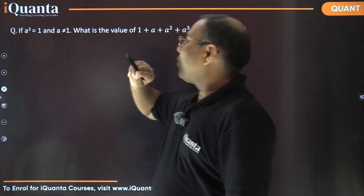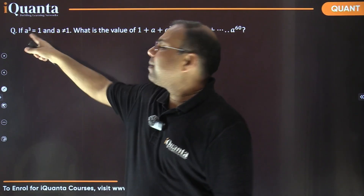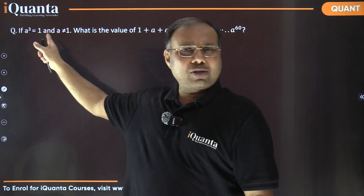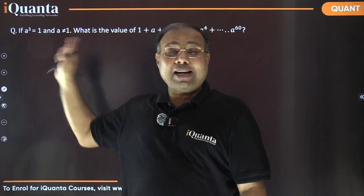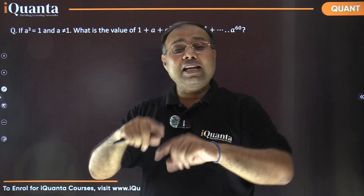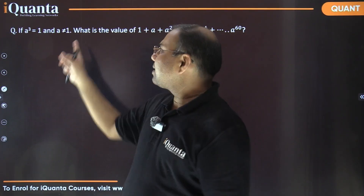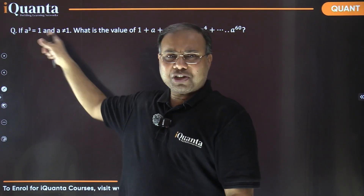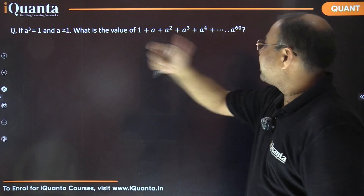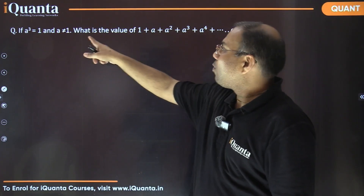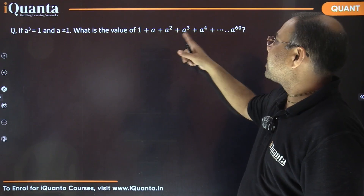See, if a were equal to one that would trivially satisfy the equation, so a ≠ 1 has been mentioned — a is something other than one which satisfies this equation. That's the given information. Now the question is asking: what is the value of 1 + a + a² + a³ + a⁴ up to a⁶⁰?